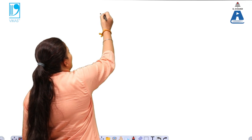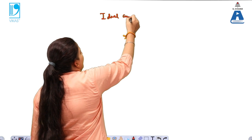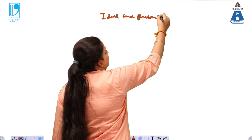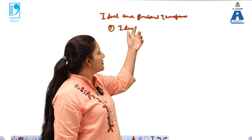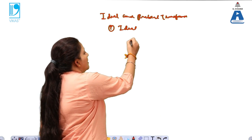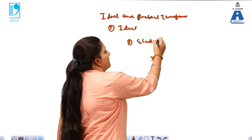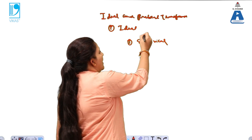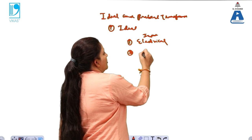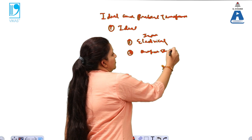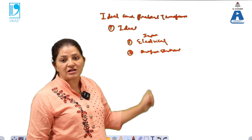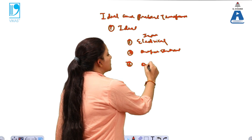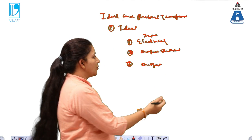We will begin with two kinds of transformer: the first one is an ideal transformer, and the second one is a practical transformer. In a transformer, the input power is electrical and the output is also electrical. So the basic features of a transformer are: input is electrical, output is also electrical.